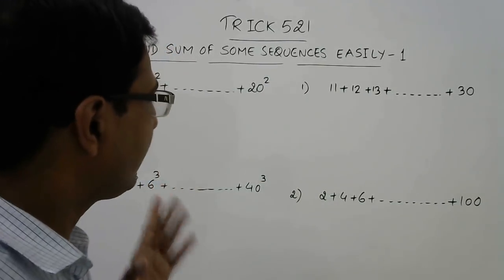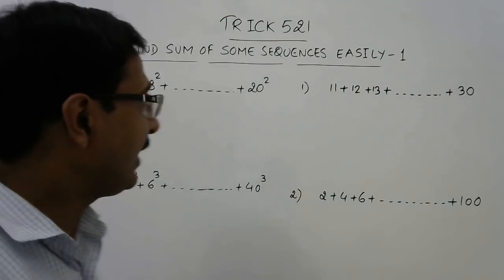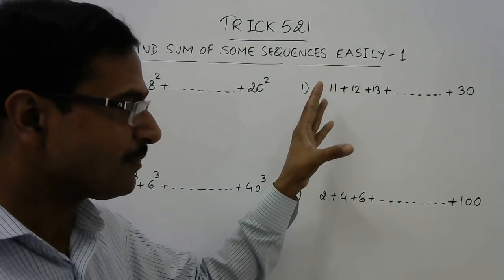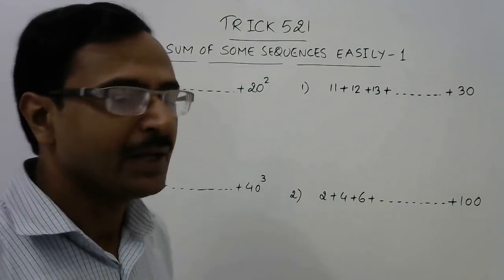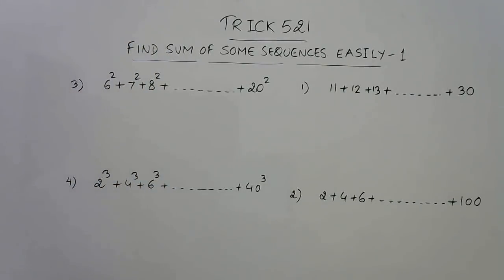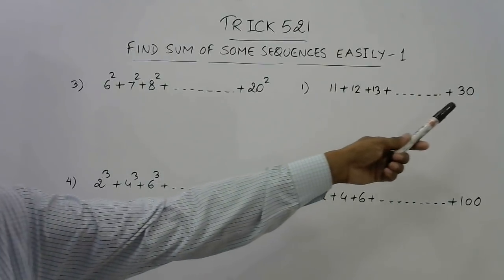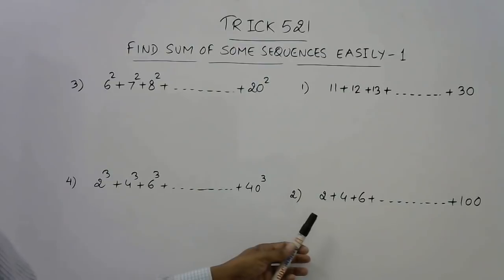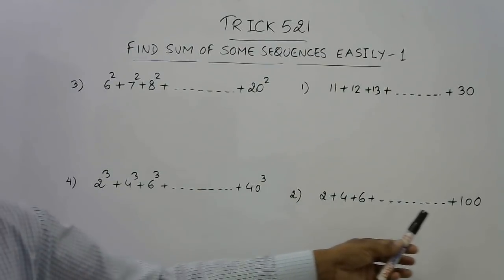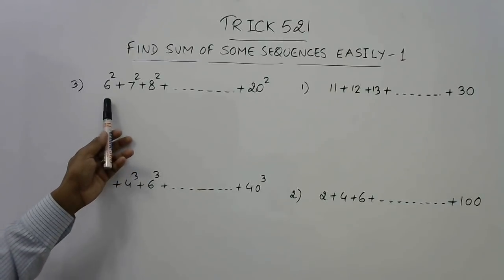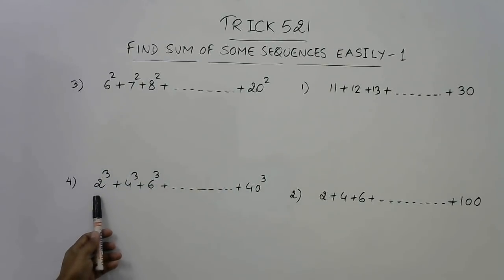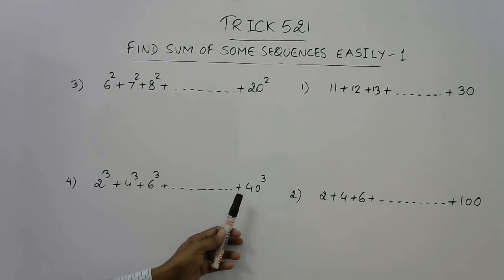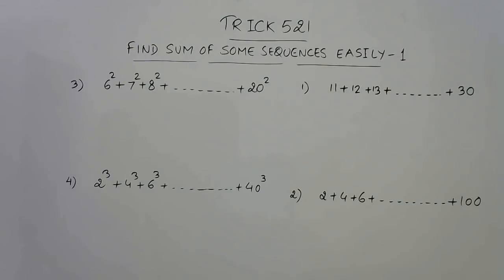Hello friends, in trick number 521 I am going to tell you a shortcut for finding the sum of some special sequences. This is part one of a series of videos on finding the sum of special sequences. I have written four questions here on the board. In the first question we have natural numbers starting from 11 up to 30. In the second we have all even numbers from 2 up to 100. In the third we have squares of natural numbers from 6 to 20. And in the fourth we have cubes of even numbers starting from 2 and ending at 40.